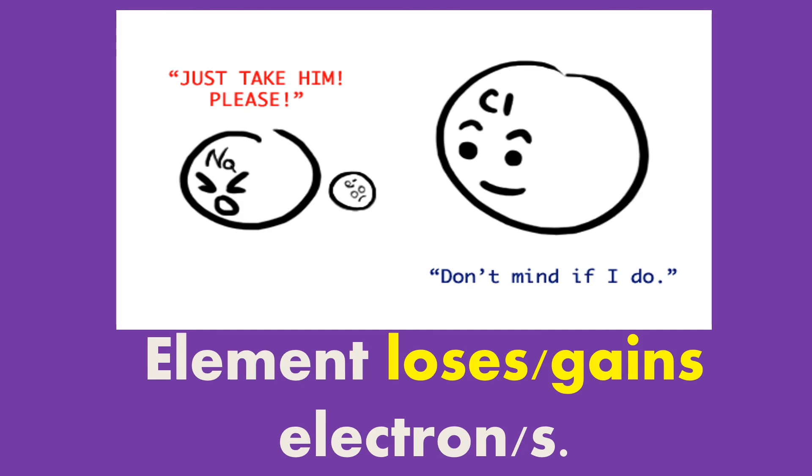These atoms are then called ions. Positive ion occurs when an atom loses an electron, meaning it has more protons than electrons. While negative ion occurs when an atom gains an electron, meaning it will have more electrons than protons.